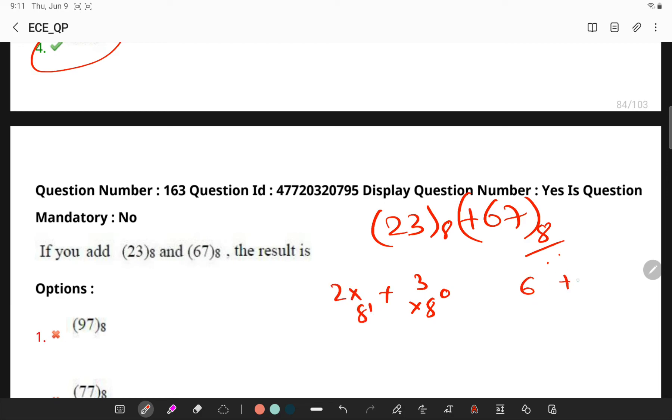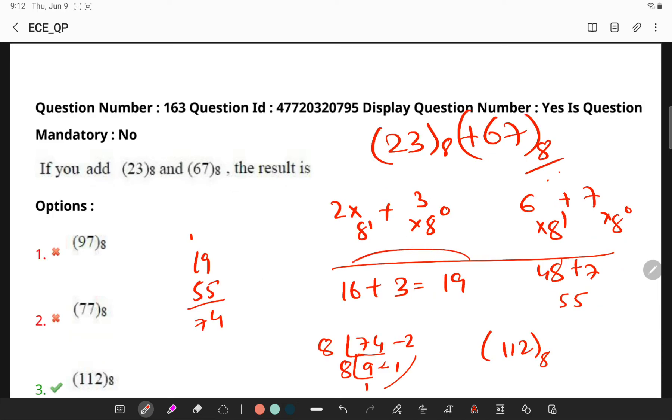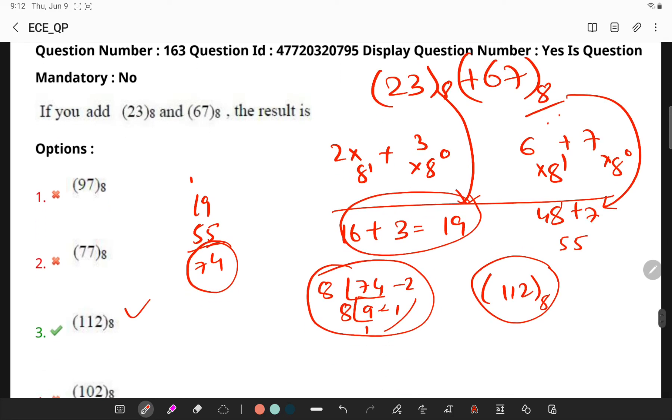So, if I convert them 3 into 8 power 0 plus 2 into 8 power 1, similarly, 7 into 8 power 0 plus 6 into 8 power 1, then, so if you see the steps, I converted 23 into decimal and then 67 into decimal where I got 74. Now, if I do the division, I will be getting 112 base 8 which is the answer.